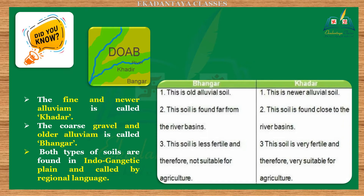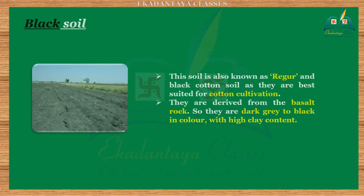Do you know? The fine and newer alluvium is called khadar, and the coarse, gravel, and older alluvium is called bhangar. Both types of soils are found in the Indo-Gangetic plain and are known by these regional names.